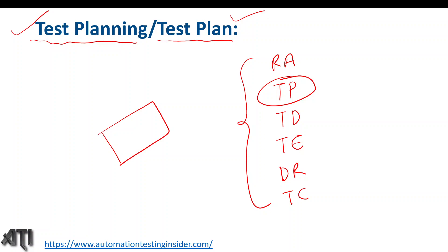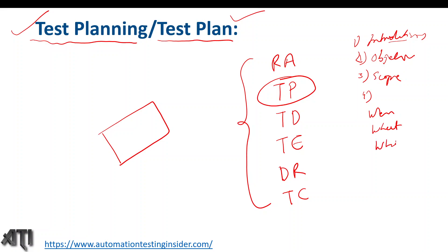Unless we have a proper test plan, we cannot perform proper testing. A test plan is a document which covers all the testing activities as part of test planning. What are the things covered in a test plan document? There are different sections: introduction, objective of testing, scope of testing — what to test, who will test, when to test, and what items are in scope and out of scope. There are around 15 sections in a test plan, more or less depending on the project or company.